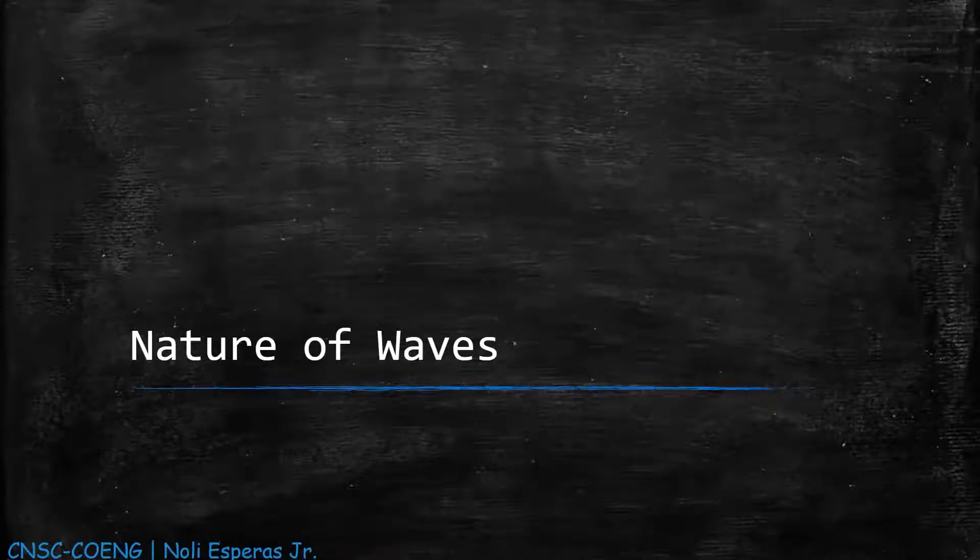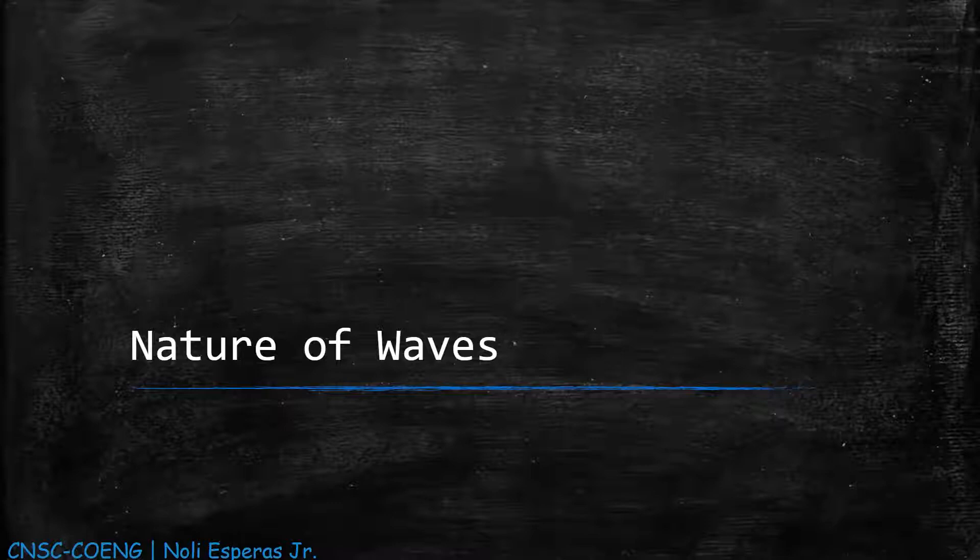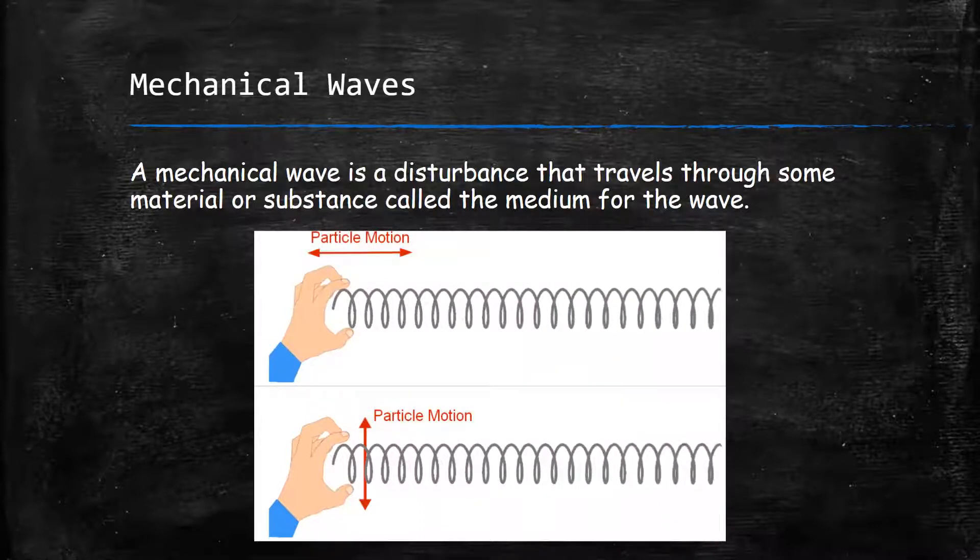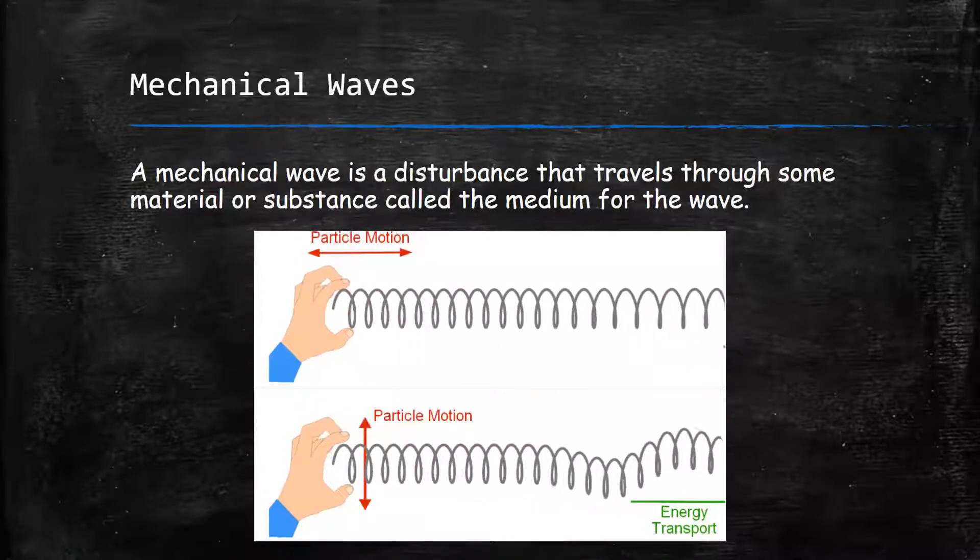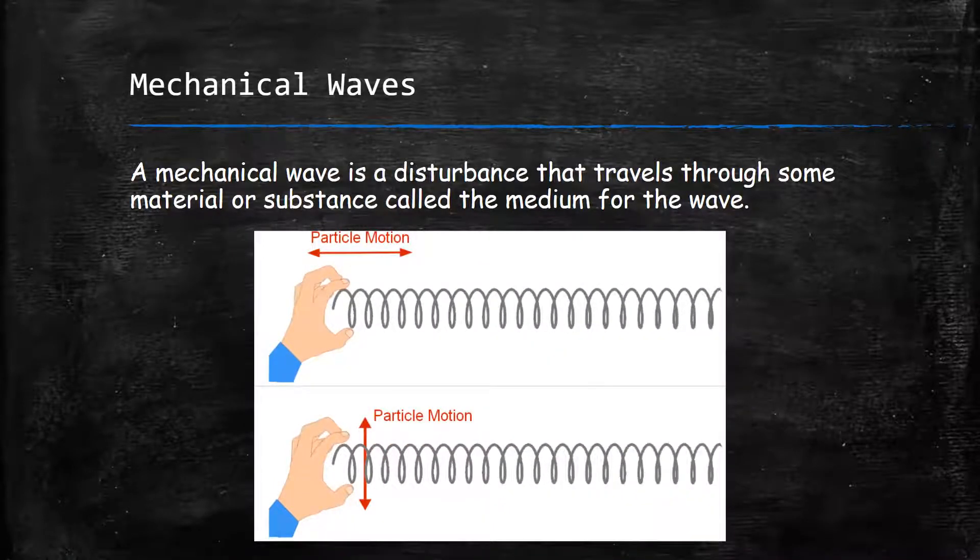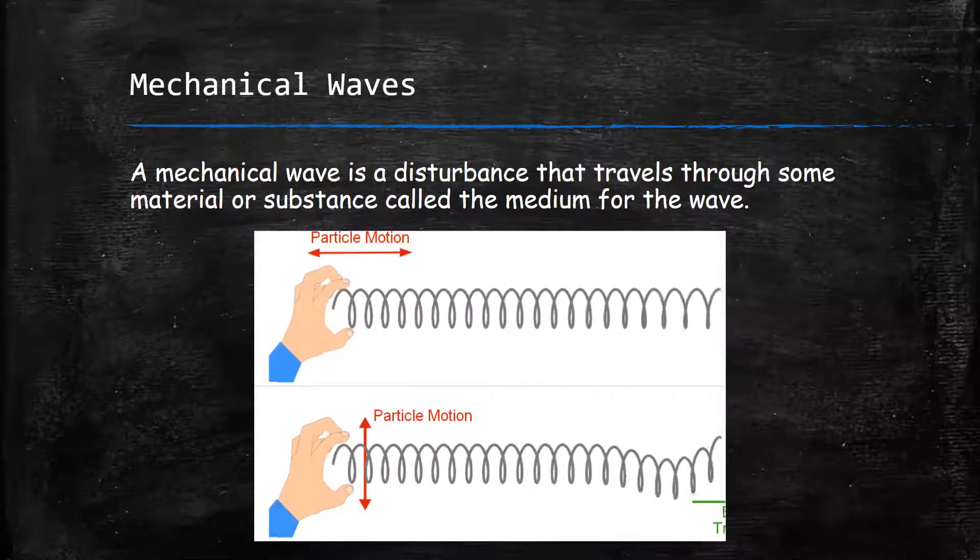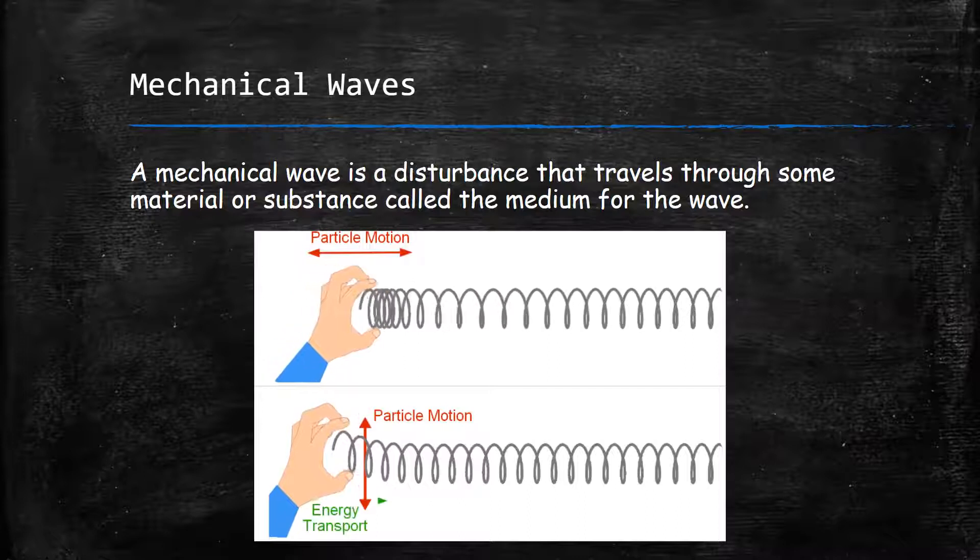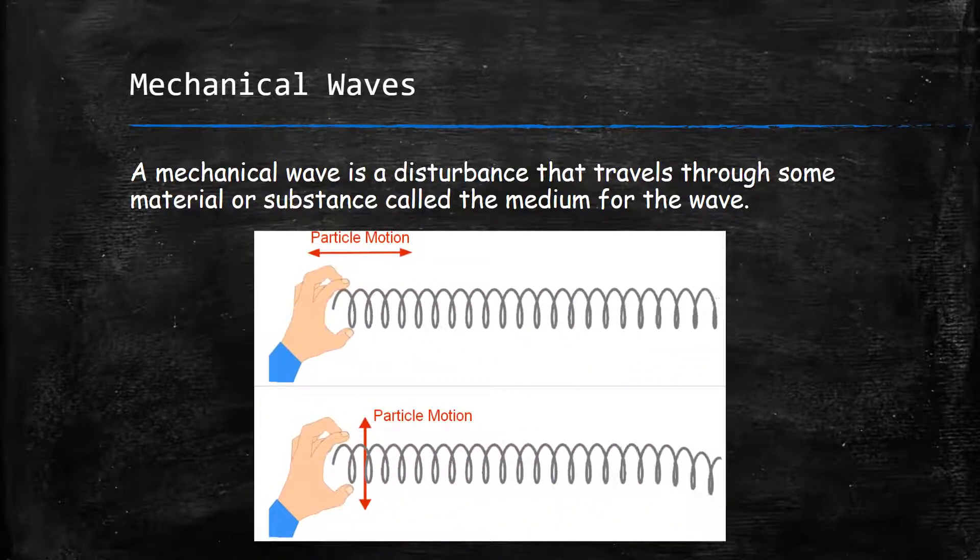In this chapter, we will discuss about the mechanical waves, the waves that travel within some material called a medium. We begin this chapter by deriving the basic equations for describing waves, including the important special case of sinusoidal waves in which the wave pattern is a repeating sine or cosine function. Mechanical waves is a disturbance that travels through some material or substance called the medium wave. As a wave travels through the medium, the particles that make up the medium undergo displacement of various kinds depending on the nature of the wave. There are two features common to all waves. First, a wave is a traveling disturbance. Second, a wave carries energy from place to place.